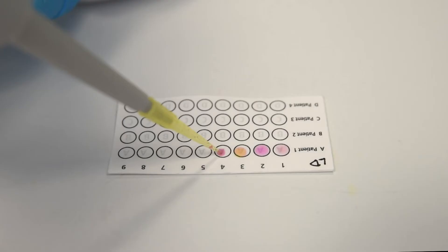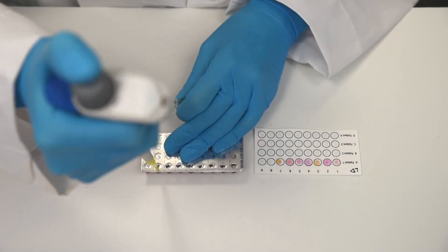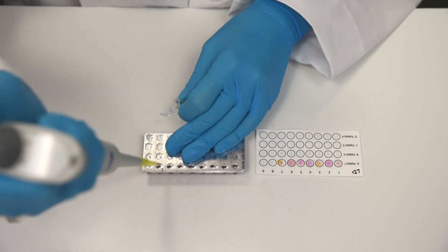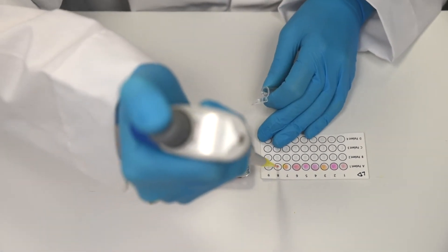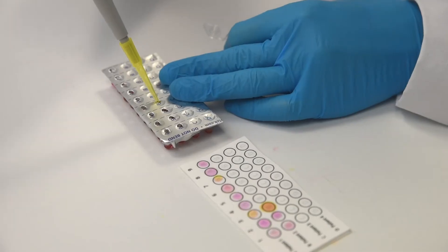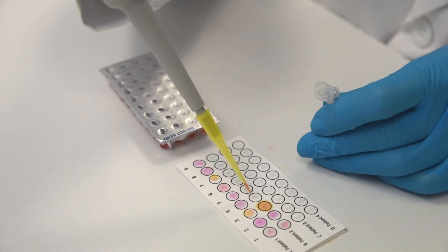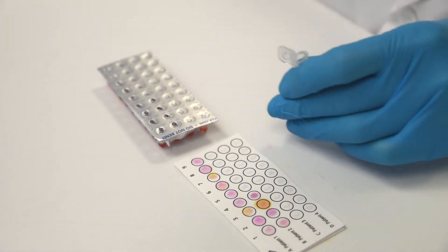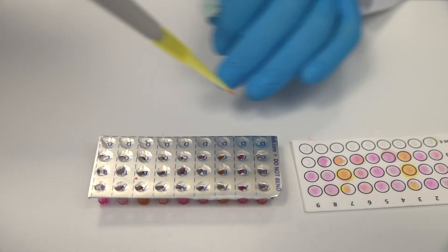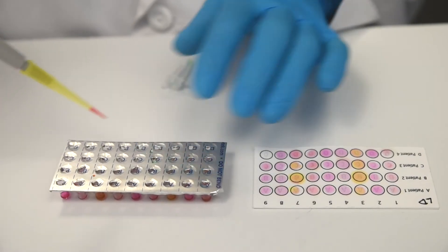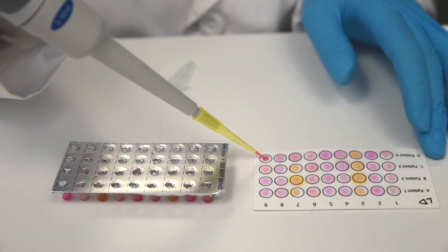Step 8. Continue repeating steps 4 through 6 for each additional well on the top row. Then continue with the remaining three rows. Remember to change pipette tips after each sample. Once all samples have been mixed with control cDNA and added to the paper microarray card, continue with Step 9.